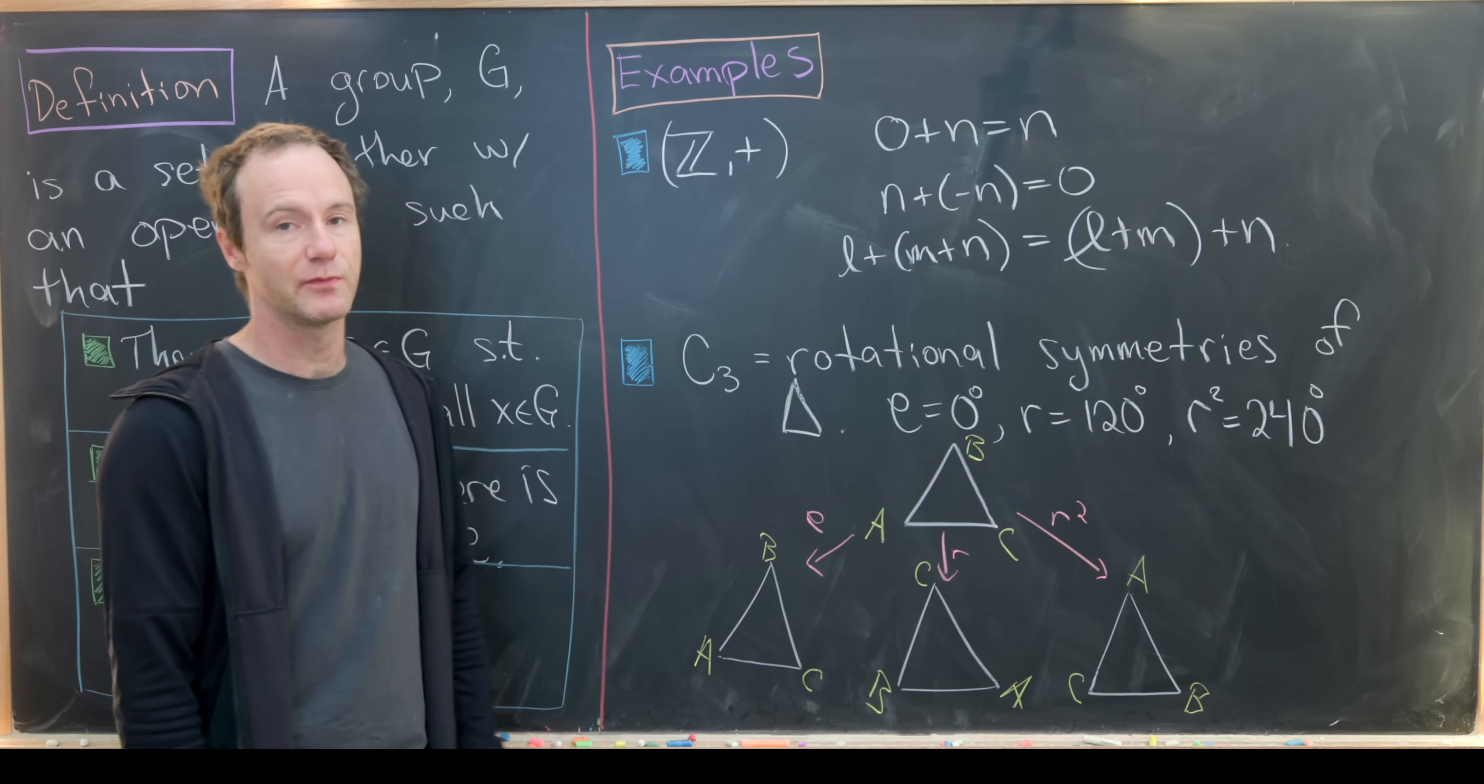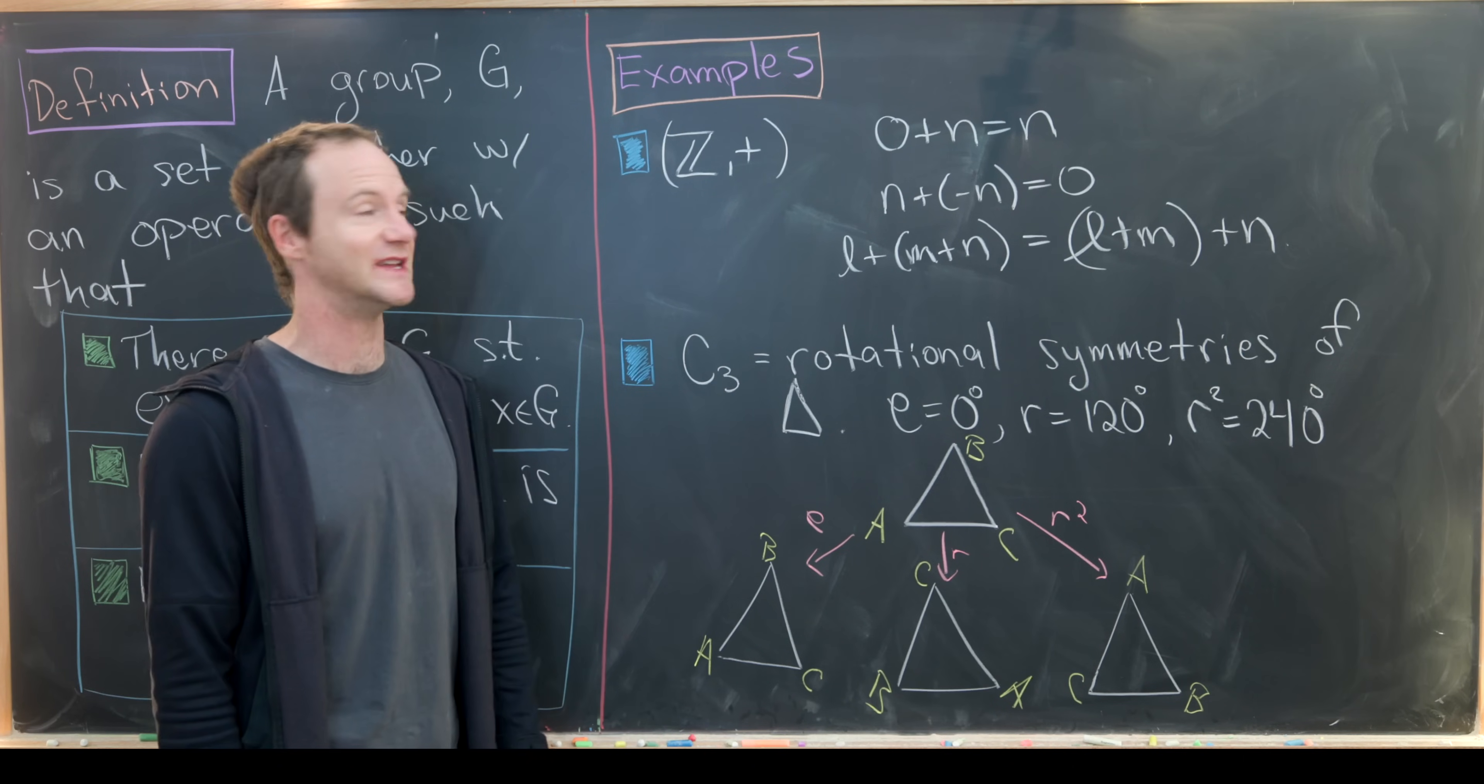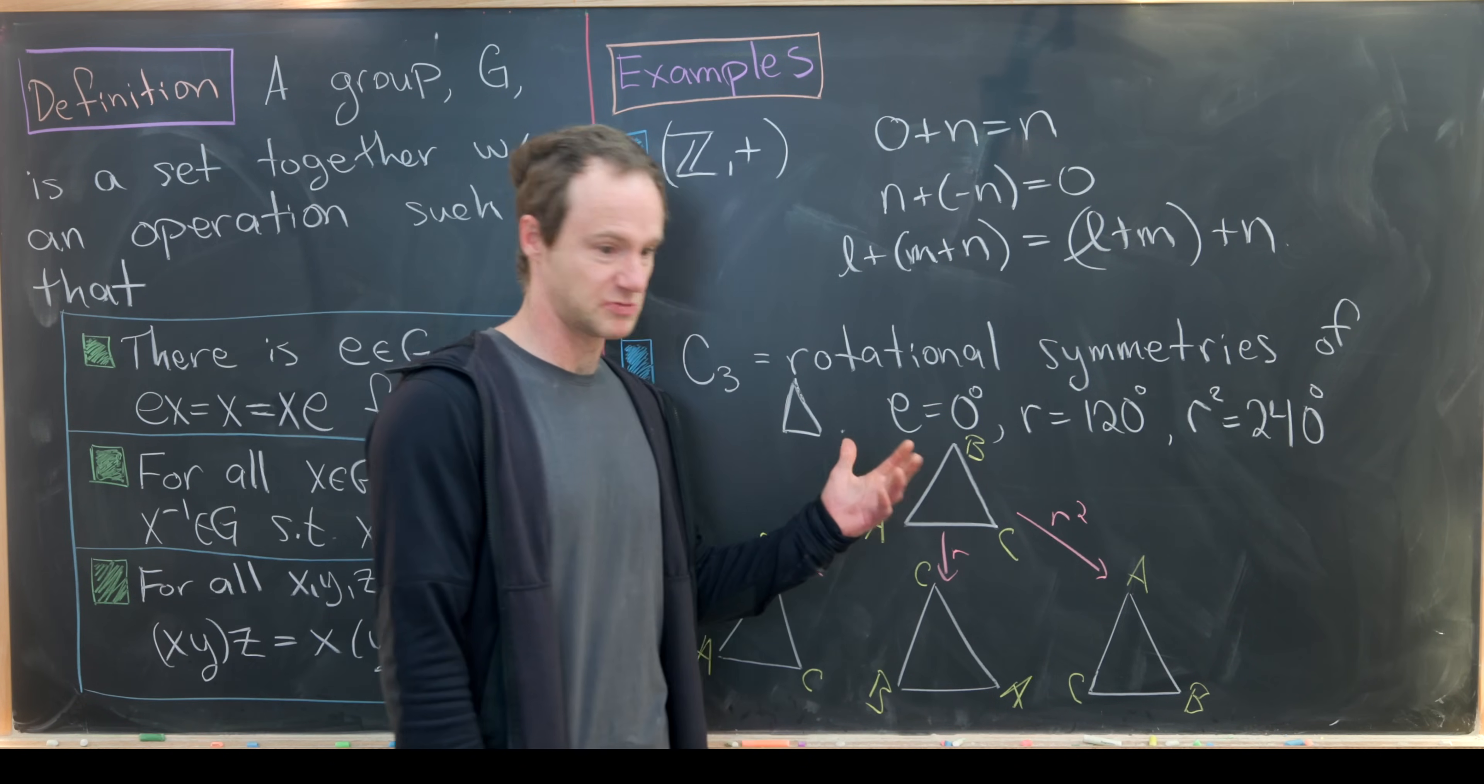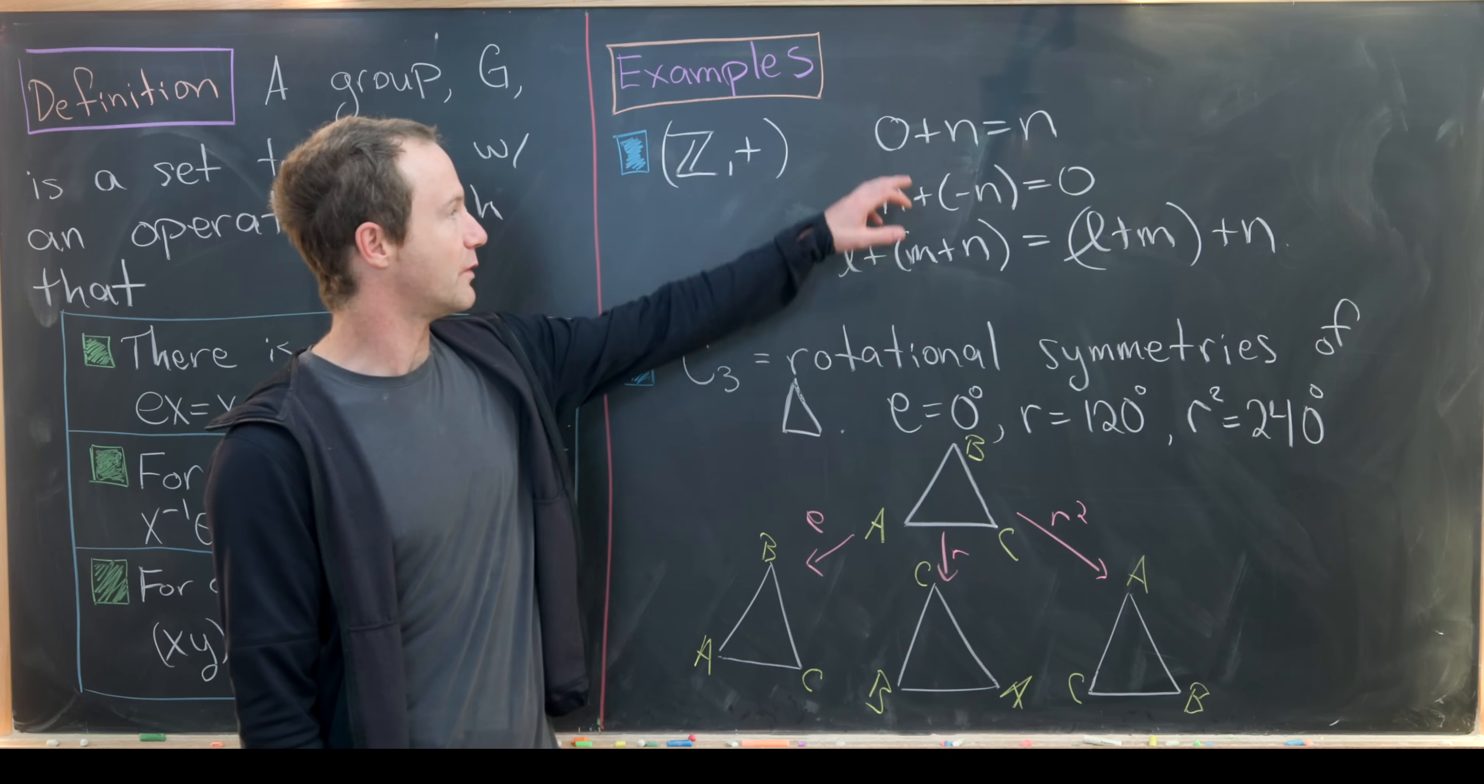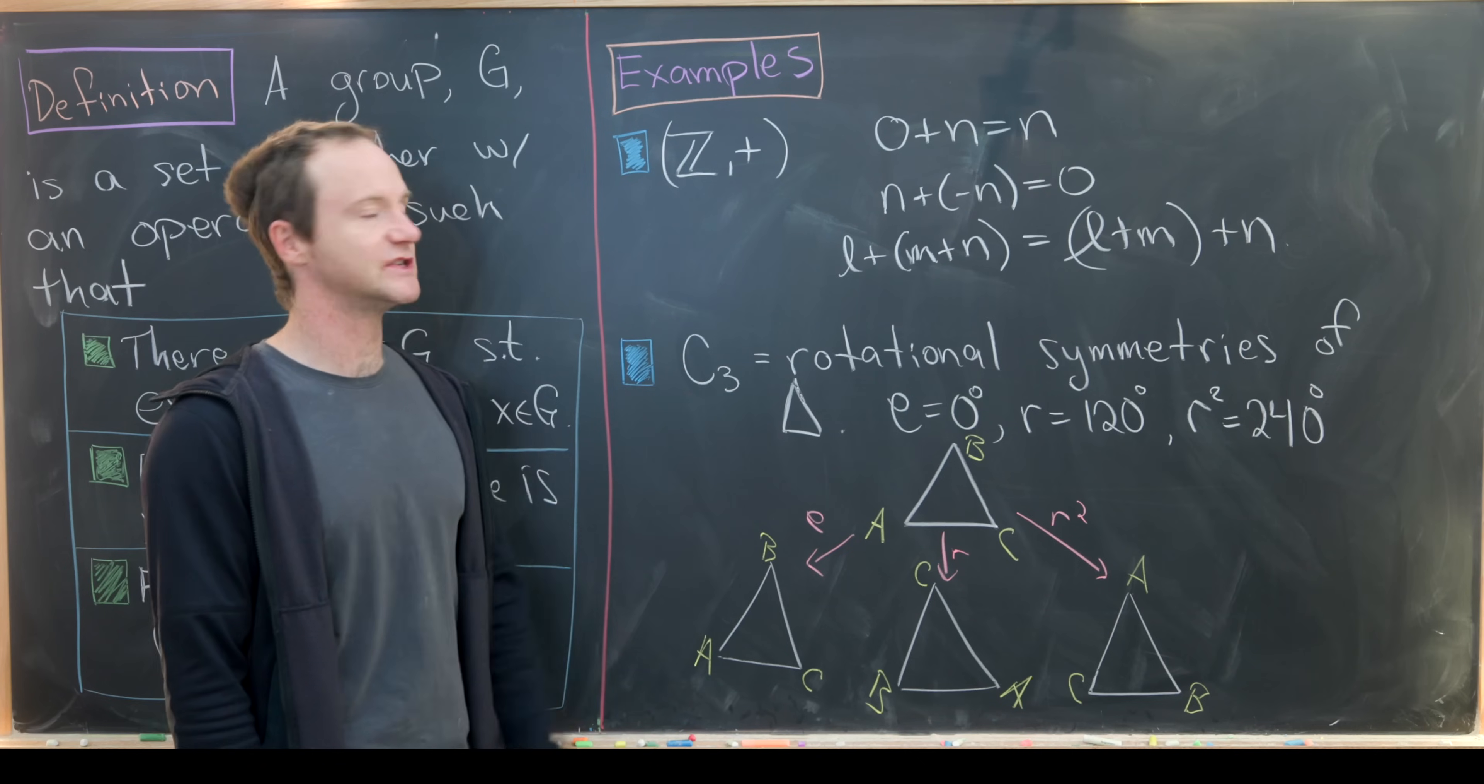Let's look at a couple of basic examples. Maybe the most basic arithmetic example would be the group of integers where our operation is addition. Obviously, zero would be the identity because zero plus anything just is whatever you started with. We could write that as zero plus n equals n for any integer n.